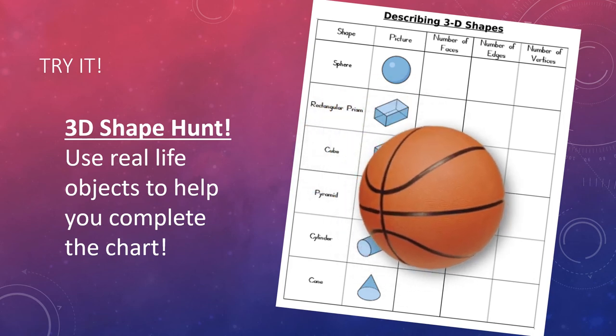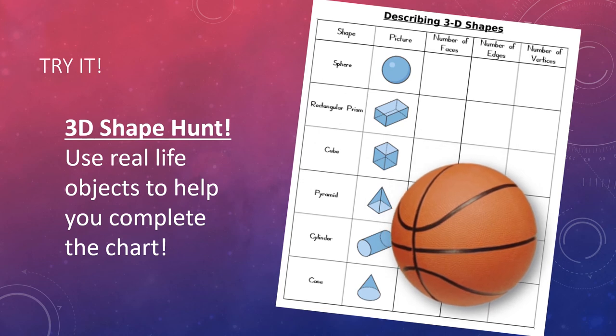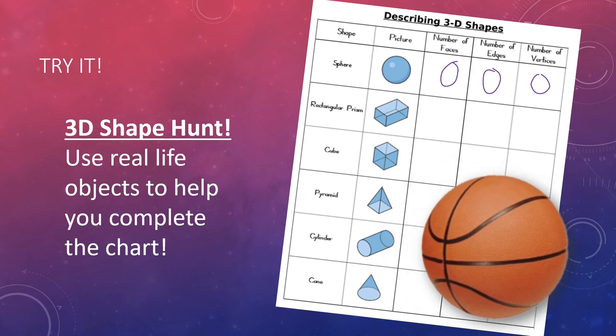Let's try a couple together. Let's go back to my basketball. What shape is it? A sphere. Well this one's a little tricky but also kind of easy because when we look at a sphere, there are no faces, no edges, and no vertices.